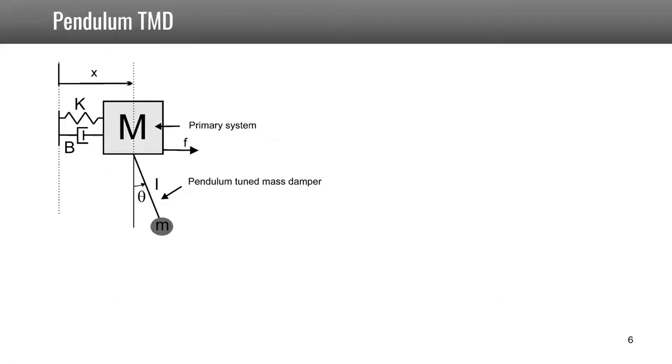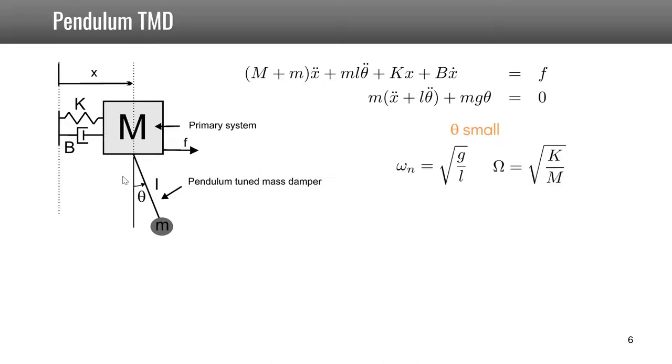A second common way to damp the vibration of a primary system with a tuned absorber is to use a pendulum. The motion of the primary system is given by x, and the motion of the pendulum is given by the parameter theta. If we assume that theta is small, this is the equation of motion. We can define omega n as the natural frequency of the pendulum, which is, as is well known, square root of g over L, where g is the constant of gravity.